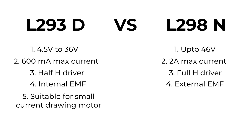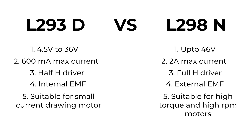The L293D is suitable for small current-drawing motors like BO motors or DC gear motors up to 500 RPM, and small stepper motors drawing less than 600 mA at their highest torque rating. The L298N has the advantage of higher output current up to 2 amperes, making it suitable for high-torque and high-RPM motors like Johnson motors and high-torque DC gear motors.